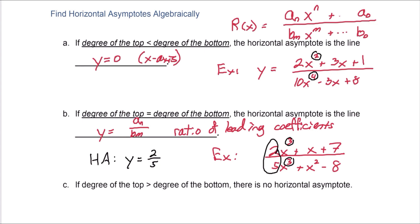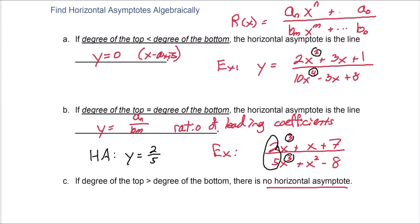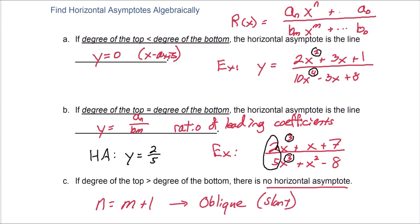For rule c, if the degree of the top is greater than the degree of the bottom, then there is no horizontal asymptote. However, if the degree of the top is exactly one more than the bottom — that is, n equals m plus 1 — then we look for an oblique or slant asymptote. We'll talk about that later.